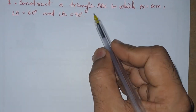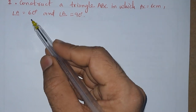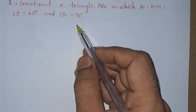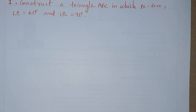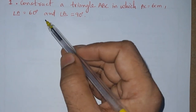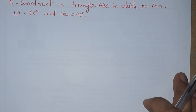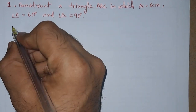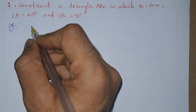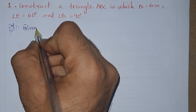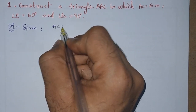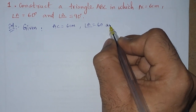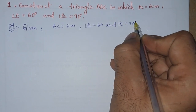First problem: construct triangle ABC in which AC is equals to 6 centimeters, angle A is equals to 60 degrees, and angle B is equals to 90 degrees. They have given two angles, so the type of construction is ASA — two angles and one side. In the solution, what is given: AC equals 6 centimeters, angle A equals 60 degrees, and angle B equals 90 degrees.